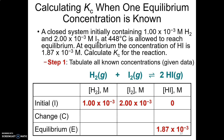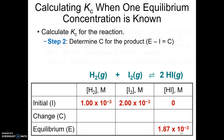Now step two. I know both the initial and the equilibrium for HI. If I started with nothing and ended with 1.87×10⁻³, then I gained +1.87×10⁻³. So the change for HI is +1.87×10⁻³.